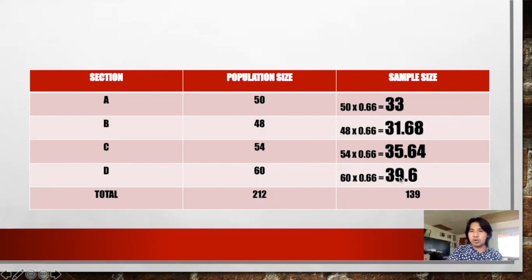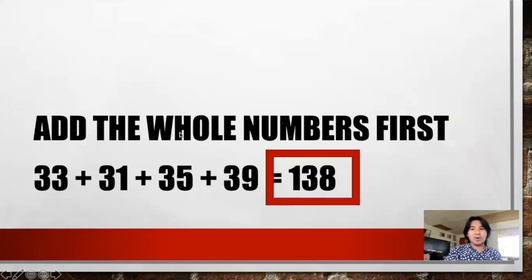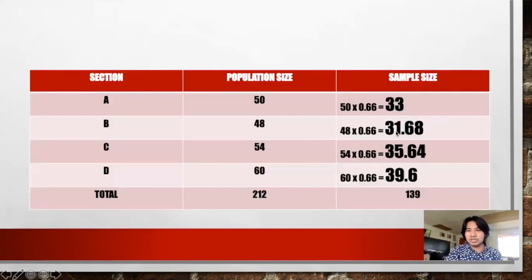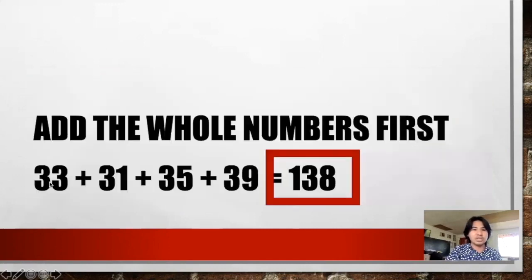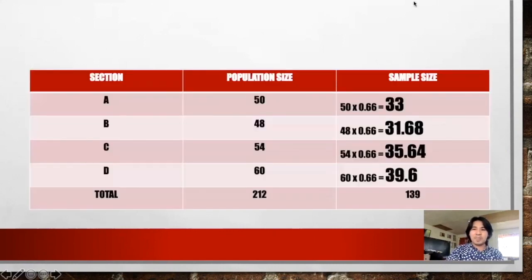All these numbers must add up to 139. So we take the whole numbers first: 33, 31, 35, and 39. Adding these together — 33 plus 31 plus 35 plus 39 — equals 138. We are one short of our target sample size of 139.